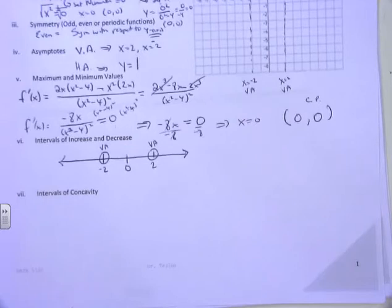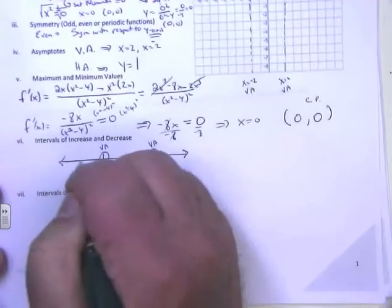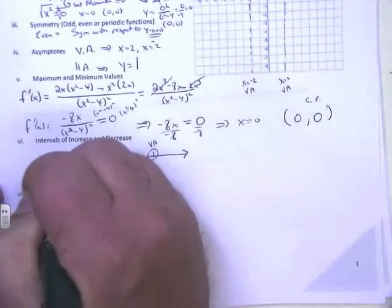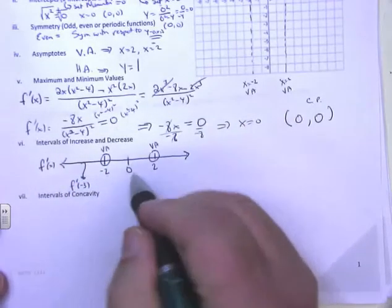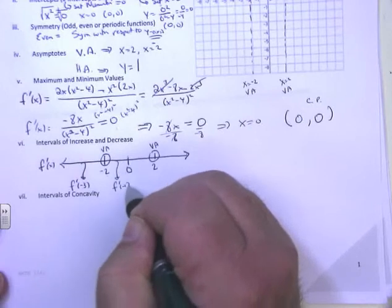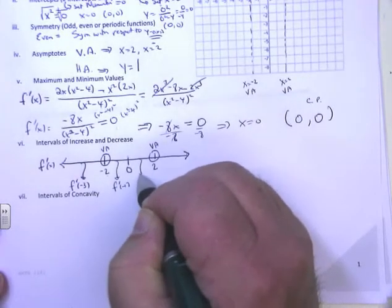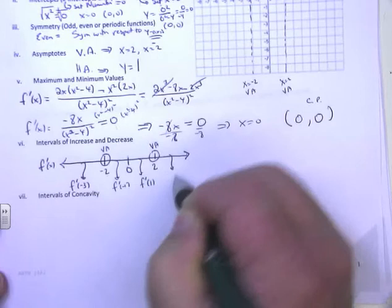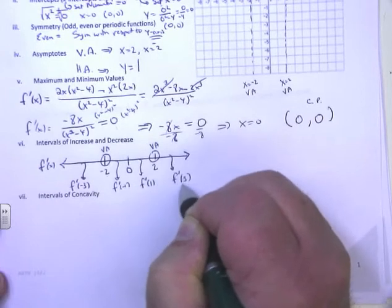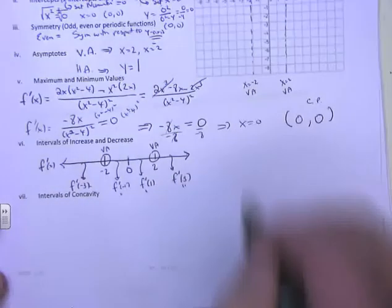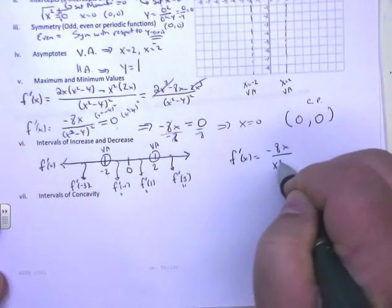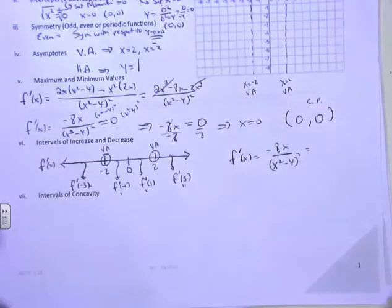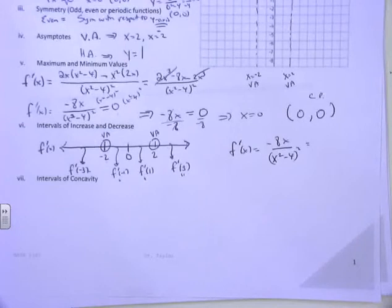Test values using the derivative -8x / (x² - 4)²: choose -3 (less than -2), -1 (between -2 and 0), 1 (between 0 and 2), and 3 (greater than 2). Plugging into the derivative using a calculator: at x = -3, I get ≈ 0.96, positive. At x = -1, I get ≈ 0.89, positive. At x = 1, I get ≈ -0.89, negative. At x = 3, I get ≈ -0.96, negative.